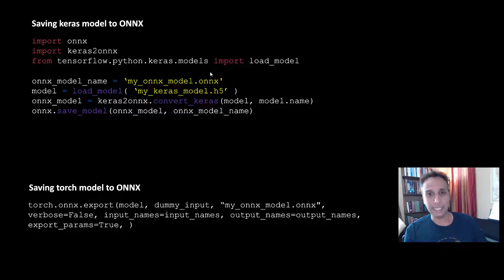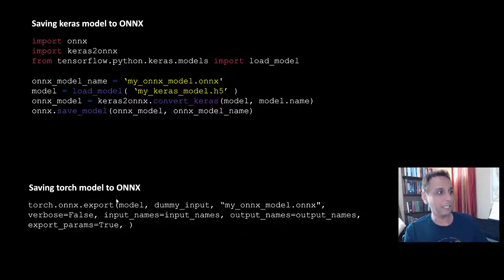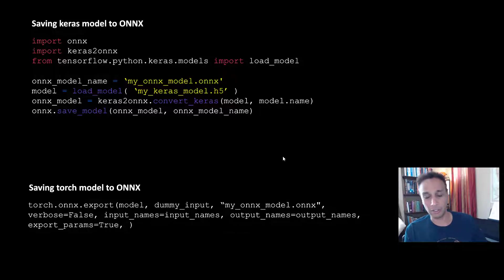Now let's look at how you can save these models — it's very easy. I'll go through this exercise in the next video, but if you can't wait: it's just Keras to ONNX, install it and use it. You load your Keras model, define your ONNX model, and call Keras to ONNX convert. In PyTorch it's exactly the same, but it's probably already there in torch — just use torch.onnx.export with your model, your input, and your output .onnx file. Saving is pretty straightforward.